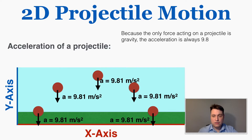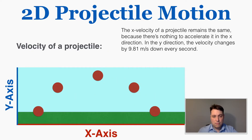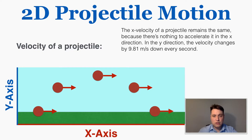The acceleration of a projectile is always 9.81 m/s² straight down, because the only force acting on it is gravity, and gravity on Earth accelerates everything at 9.81 meters per second squared downward. The velocity of a projectile is the direction of its actual motion. We can break this into its x velocity and y velocity. The x velocity is going to stay the same the whole time — if you find a projectile's x velocity at any one point, that's the same for all other points because there's no force to speed it up or slow it down in that direction.